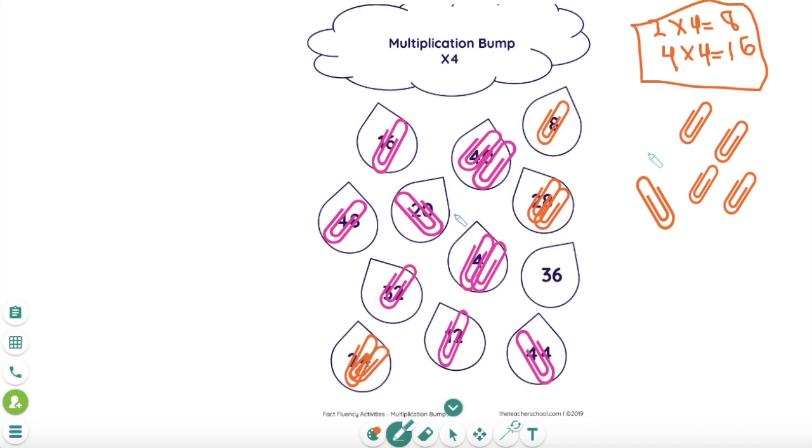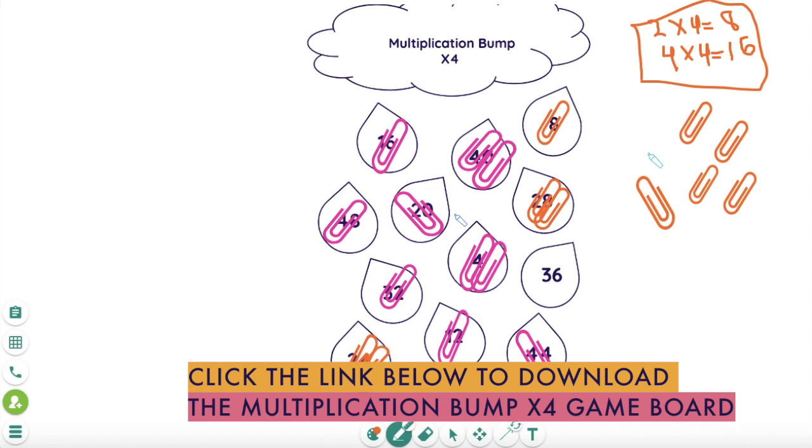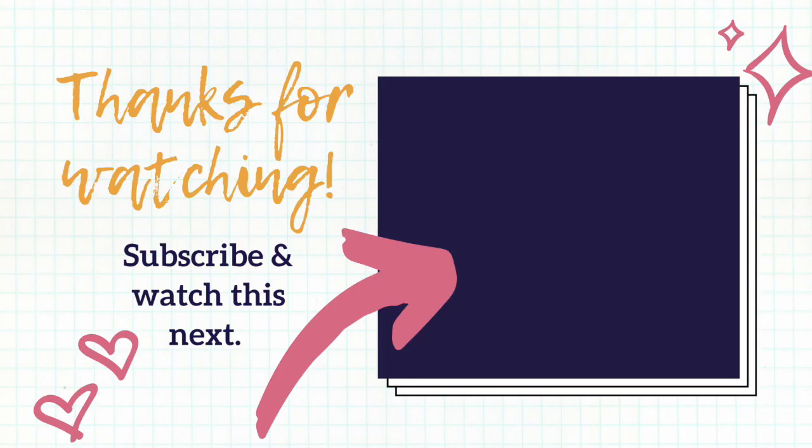So that is multiplication bump, and you don't have to use this game board, but I think it might save you some time. So you can download the game board by clicking the link below. If you want to learn more about playing another game adapted for remote learning, this time it is called the staircase game, it's a place value game. Click on this video to watch it next.